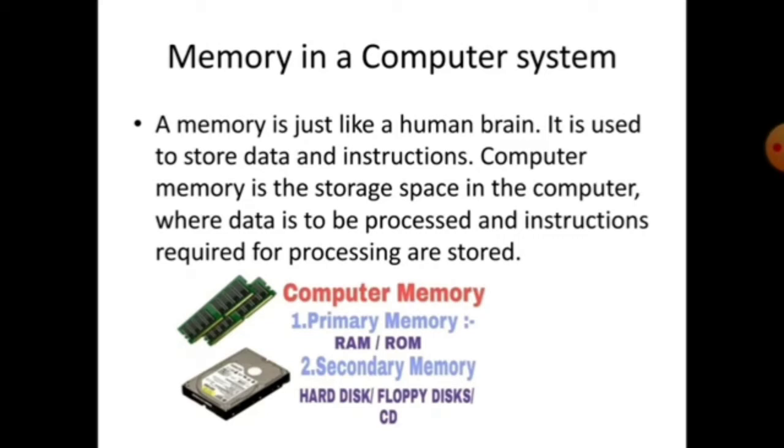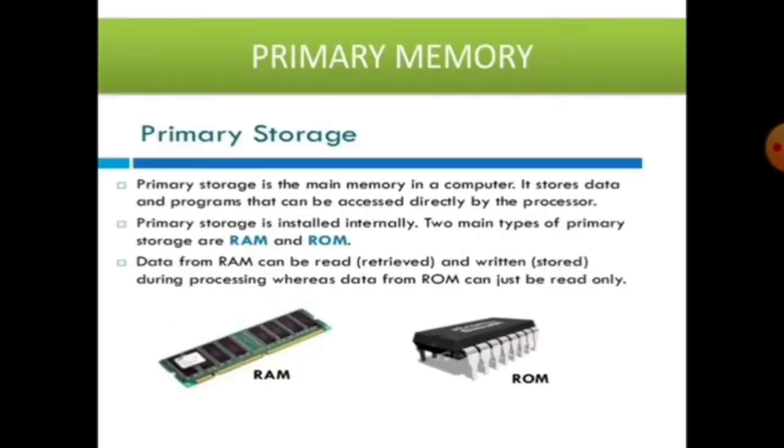So now let's talk about the primary memory. As you can see on the screen, there are RAM and ROM. These two both look like a chip, and these are installed in the CPU. Let's move forward.